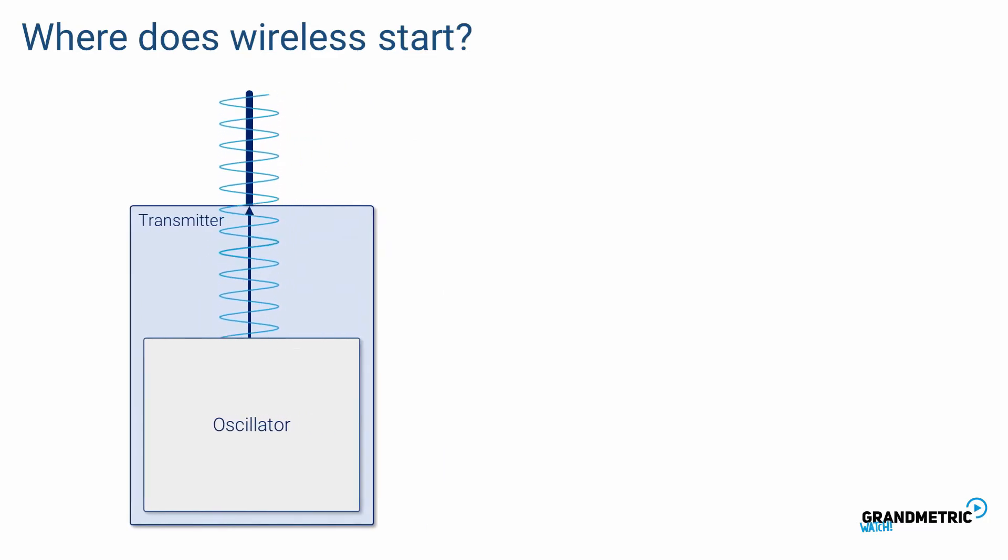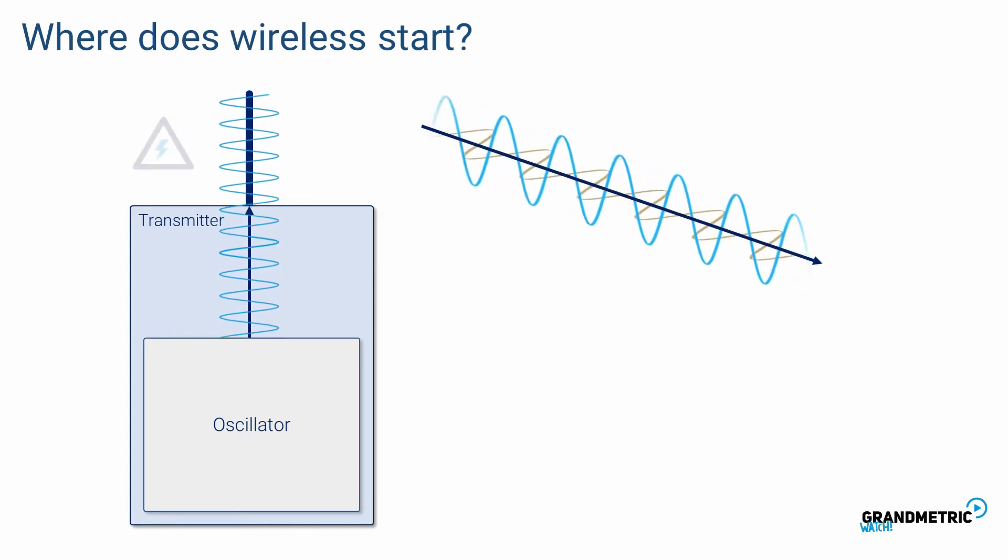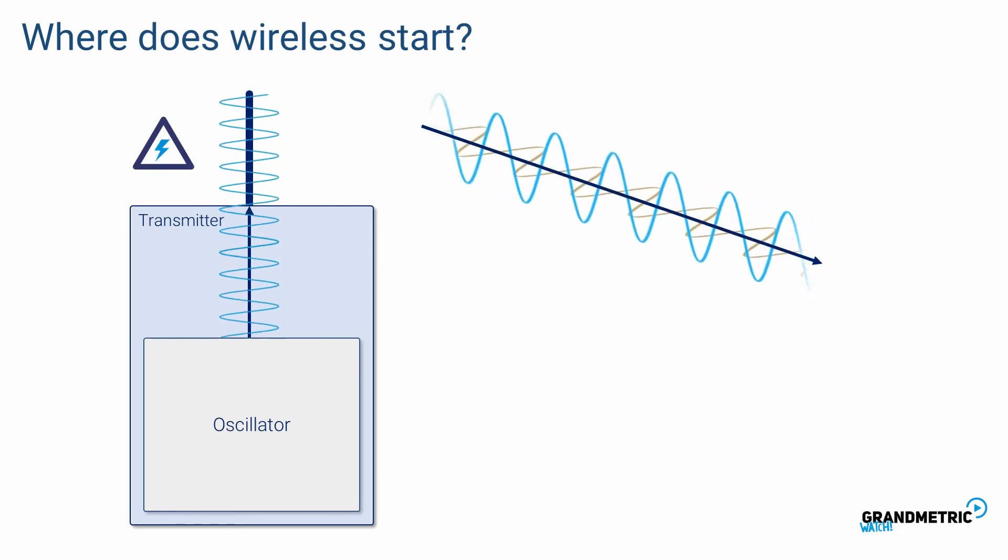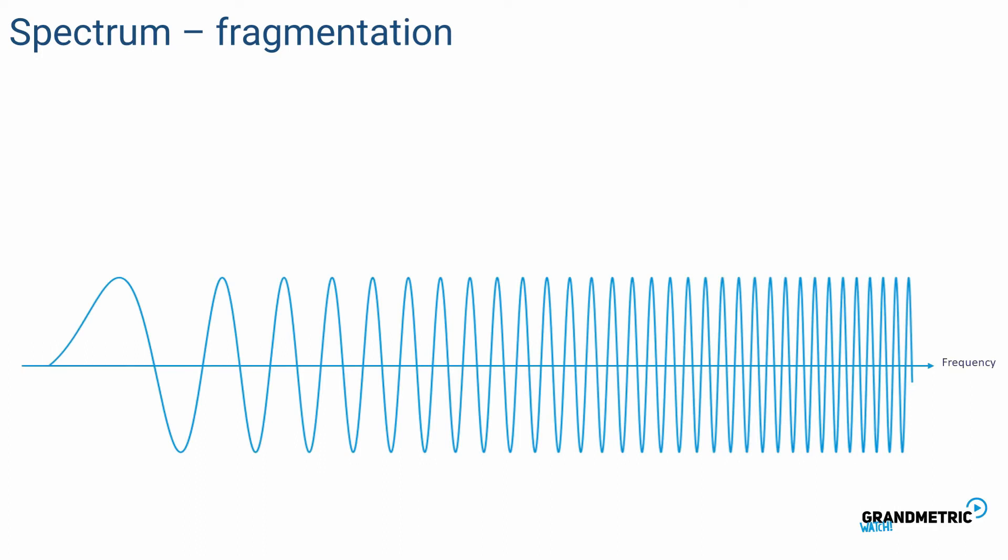The oscillator generates signal continuously and antenna radiates that signal into the air as an electromagnetic wave. Signal in the antenna is an electric current while a propagated signal is a wave. Depending on how fast signal is changing, antenna radiates signal of different frequencies.